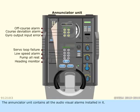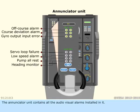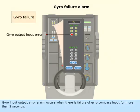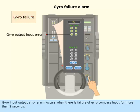The Annunciator unit contains all the audiovisual alarms installed in it. Gyro Input Output Error Alarm occurs when there is failure of gyro compass input for more than 2 seconds.